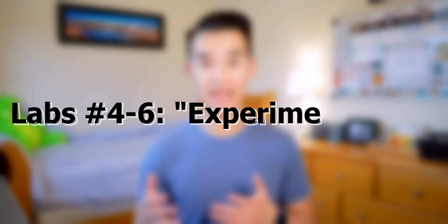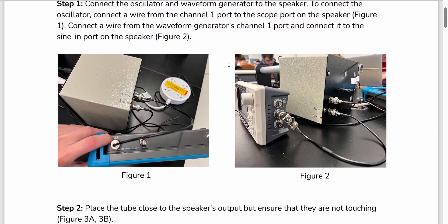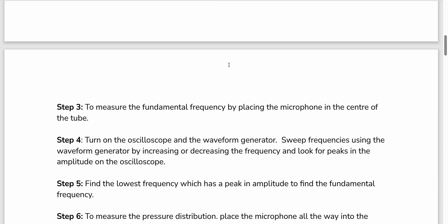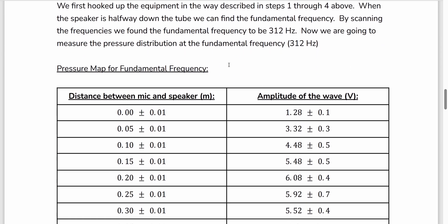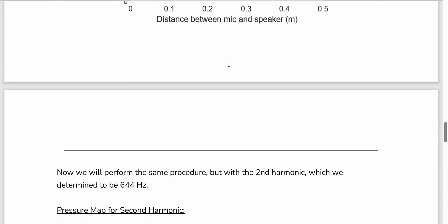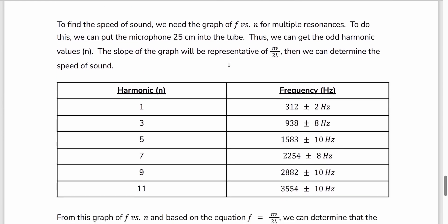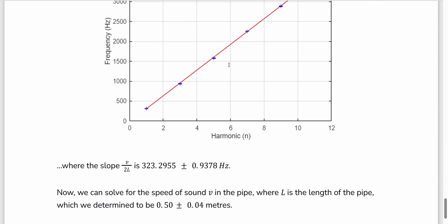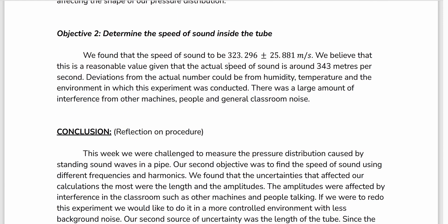Moving on to the last three experiment labs, these are two-week labs where you create your measurement procedure in the first week and carry out your procedure in the second week to get more and better data. In the first experiment lab, we were tasked with measuring the pressure distribution of sound waves in a tube and determining the speed of sound in that tube. We had access to a speaker, a microphone, a tube, a function generator, and an oscilloscope to measure the pressure distributions at different harmonics, and with this data we were able to calculate the speed of sound inside the tube.